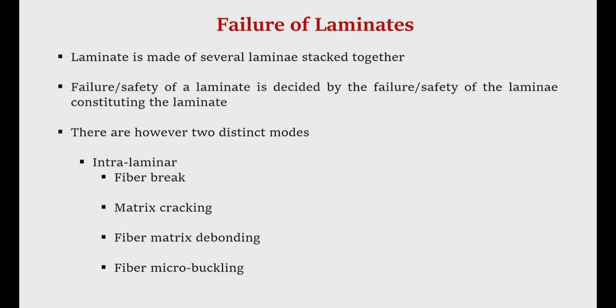A laminate is essentially made of several lamina stacked together. Therefore, the failure or safety of a laminate is decided by the failure or safety of each constituent lamina. In an n-layer laminate with n lamina stacked together, each lamina may have different fiber orientations to achieve certain design requirements in terms of stiffness and strength. Since each lamina may have different fiber orientations, their strengths with reference to the laminate analysis axis will also be different. There may be two modes of failure: one is intra-laminar failure and the other is inter-laminar failure.